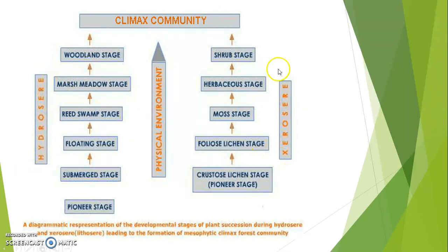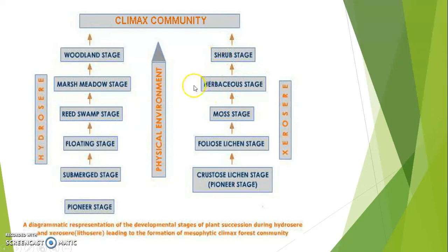Hydrosere versus xerosere. In the hydrosere, the pioneer stage is submerged, then floating, then reed swamp, then marsh meadow, and finally woodland — these are the seral stages. In xerosere, the pioneer stage is the crustose lichen stage, then foliose lichen, then moss stage, then herbaceous stage, and then shrubs. This is the diagrammatic representation of different developmental stages of plant succession during hydrosere and xerosere, leading to the formation of mesophytic climax forest community.